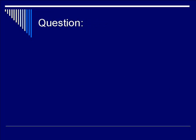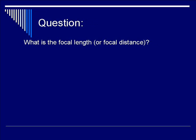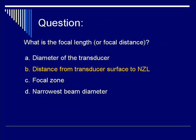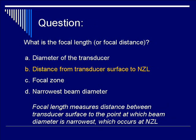Let's do another question on beam dependence. What is the definition of focal length or focal distance? Is it A: the diameter of the transducer? B: distance from transducer surface to the NZL? C: focal zone? Or D: narrowest beam diameter? The correct answer is B, the distance from the transducer surface to the NZL. Although at the focal length or NZL the beam diameter is at its narrowest, this question specifically asks for the definition of focal length, which is NZL or near zone length.